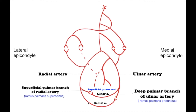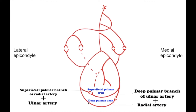The terminal part of the radial artery anastomoses with the deep palmar branch of the ulnar artery, and together they form the deep palmar arch. Arterial supply to the hand begins with the ulnar and radial arteries. The ulnar artery gives rise to the deep palmar branch and continues laterally across the palm as the superficial palmar arch. The radial artery supplies branches to the thumb, the index finger, and to the superficial palmar arch, then continues as the deep palmar arch. As a result, two arterial arches are formed: the superficial palmar arch and the deep palmar arch.